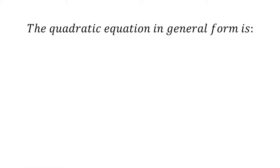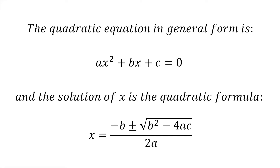The quadratic equation in general form is ax squared plus bx plus c equals 0, where a, b and c are known values, and the solution of x is the quadratic formula: x equals negative b plus or minus the square root of b squared minus 4ac, all divided by 2a.